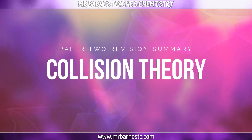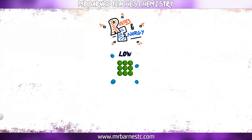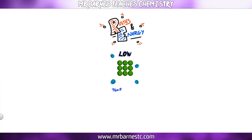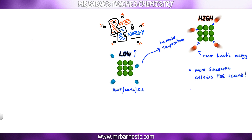Next, collision theory — how do we explain why increasing temperature, concentration, and surface area increases the rate of reaction? The diagram in the middle shows low temperature, concentration, and surface area. If we increase temperature, the particles have more kinetic energy, they move faster, and there are more collisions — in particular more successful collisions per second — giving a faster rate of reaction.